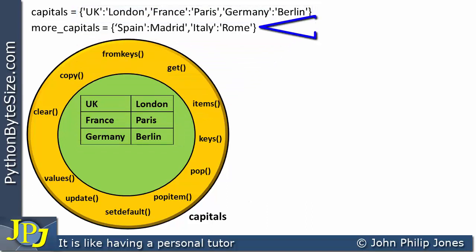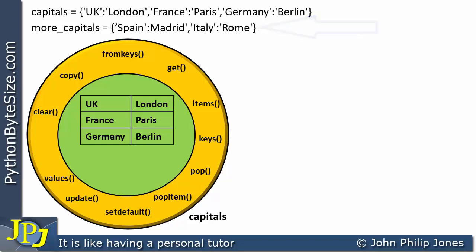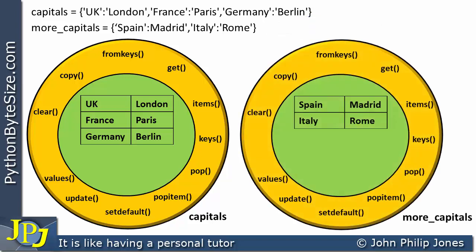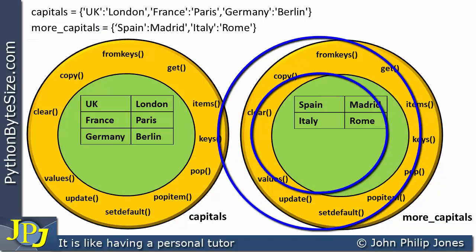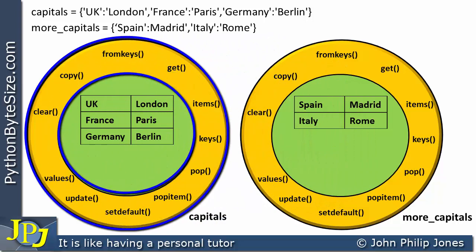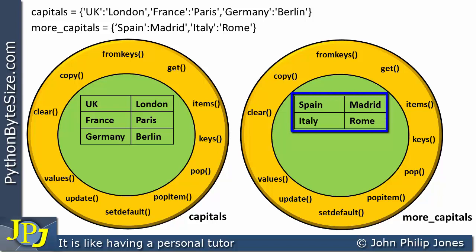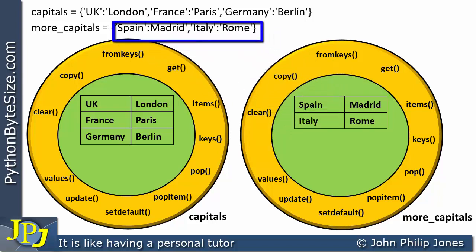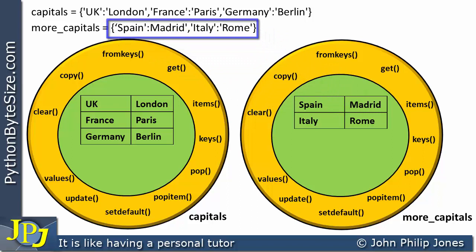Now let's consider this next program statement. I'm going to create another instance of the dictionary class, shown here, and that instance is bound to the name 'more_capitals'. It has the same methods as the first object because it's based on the same class. However, we only have two key-value pairs, because that's all that was defined in this program statement.